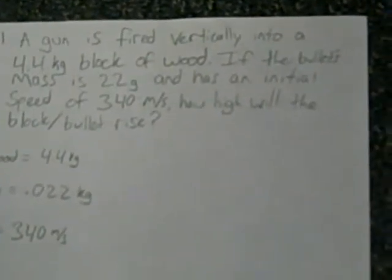A gun is fired vertically into a 4.4 kilogram block of wood. If the bullet's mass is 22 grams and has an initial speed of 340 meters per second, how high will the block and bullet rise?